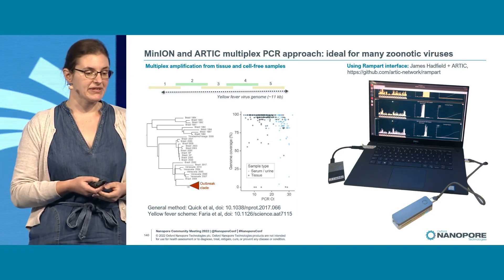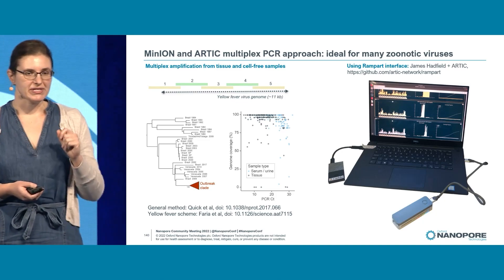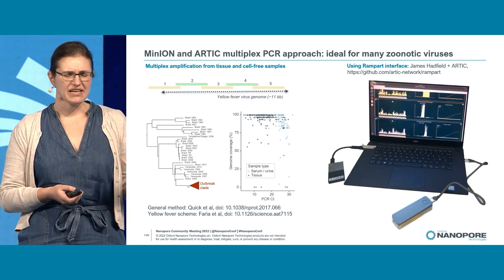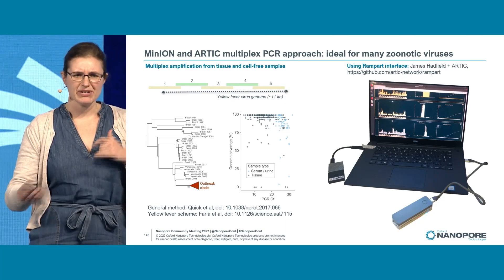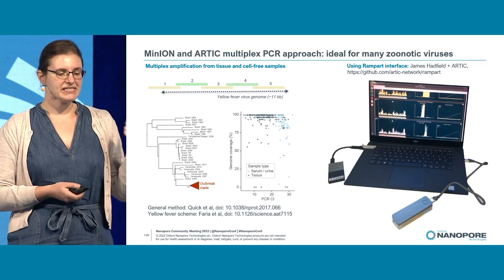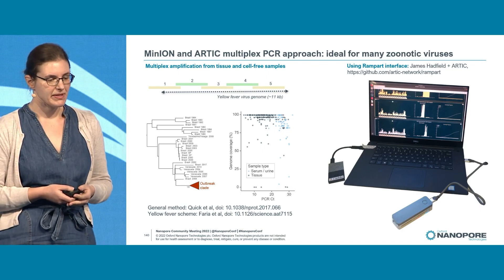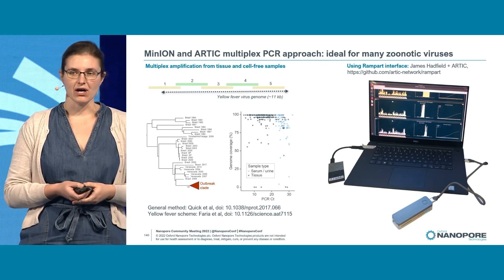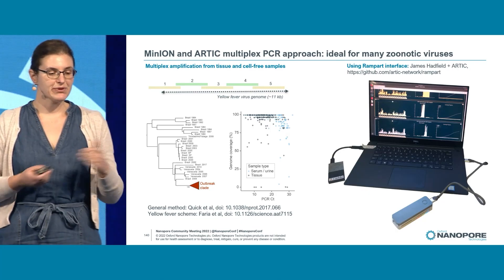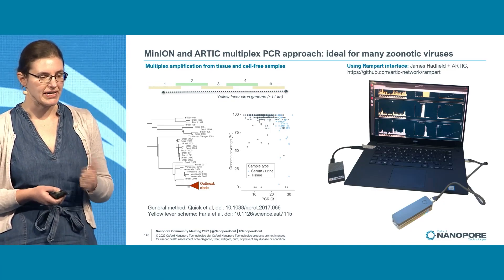The other great advantage of this method for zoonotic viruses is that it's robust across different tissue types from a wide variety of species. In this study we had seven different species of non-human primate, three species of mosquitoes, and human samples — tissue, serum, urine. This approach works well on everything you can throw at it. We could generate whole virus genomes from tissue for PCR Ct values up to about 20, and from urine and serum up to about 30. Really robust, really quick, and really cheap.